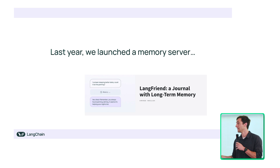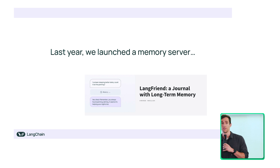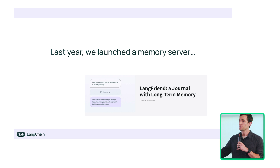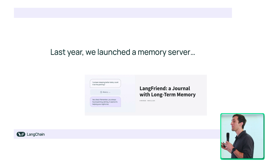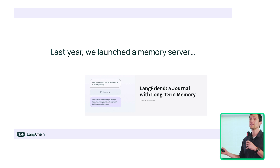A little over a year ago we launched our first memory server. It was a server designed to take in interactions between a user and an agent or chatbot, and it would extract price-derived insights about users that you could then later use. We launched LangFriend, which is a journaling app demo, to show how to use it, and we had a bunch of enterprise design partners. Over the subsequent months we worked really closely with these teams and learned that memory is very hard — lessons that caused us to rethink how we wanted to share a lot of this tooling and these approaches for memory.